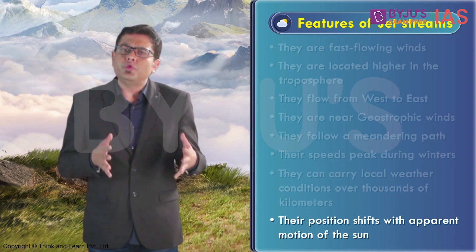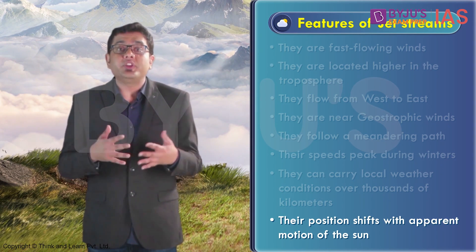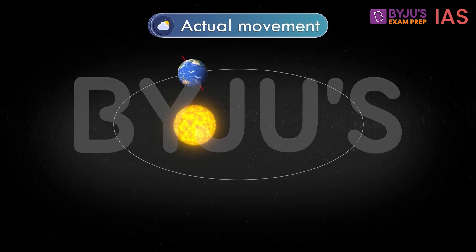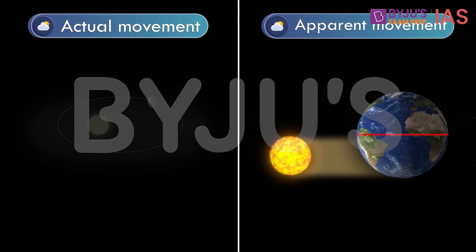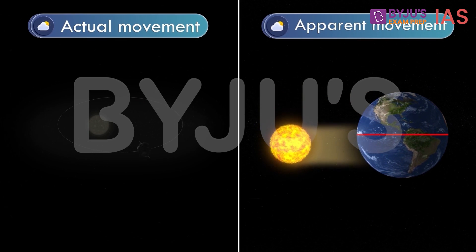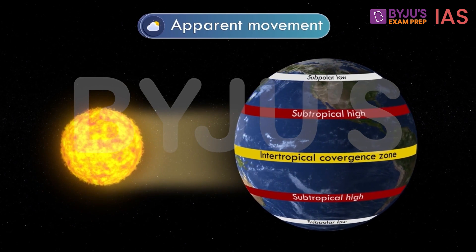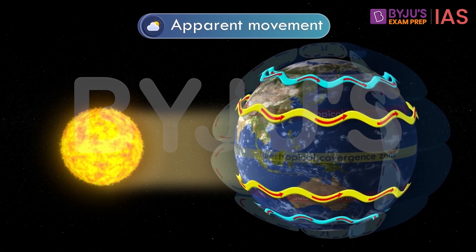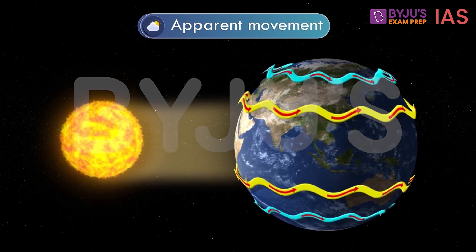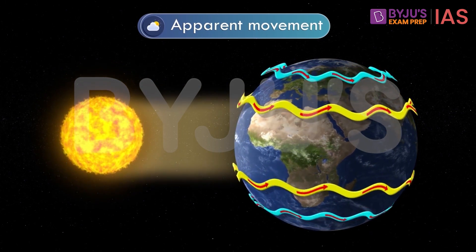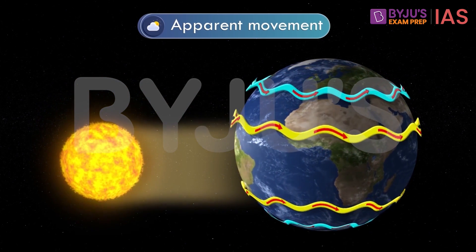One of the most peculiar features of jet streams is that their position shifts with the apparent motion of the sun. As the Earth moves around the sun in one full revolution, the position of the sun changes with respect to an observer on Earth. This apparent motion of the sun changes the position of the pressure belts and all the cells, and as a result the positions of jet streams as well. During the northward progression of the sun, jet streams shift slightly northward, while during the southward progression they move slightly southward.